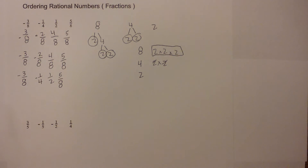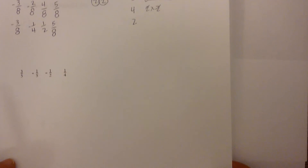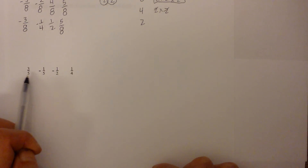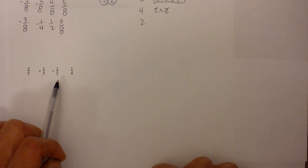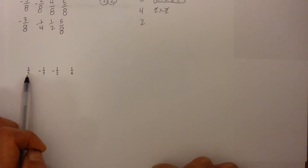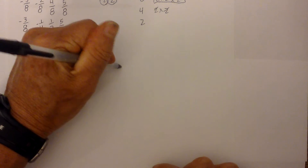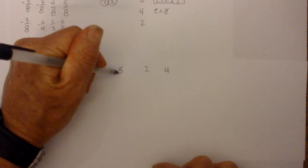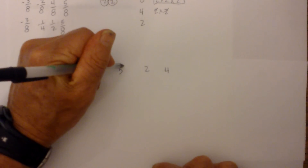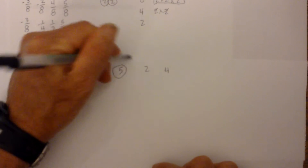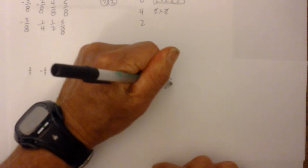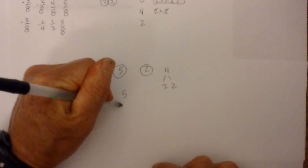Let's work one other example. Again we have different denominators, so we need to find a common denominator. My numbers are five, two, and four, so I'm going to create a factor tree. Five is already prime, two is already prime, and four is two times two. Now I list the numbers and their prime factors.